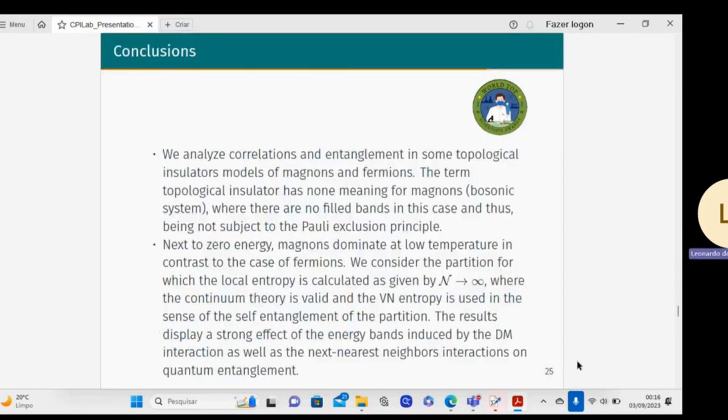As a conclusion, we analyze correlation entanglement in some topological insulator models of magnons and fermions. The term topological insulator has no meaning for magnonic bosonic systems, where there are no filled bands in this case, and thus being not subject to the Pauli exclusion principle. Close to zero energy, magnons dominate at low temperature, in contrast to the case of fermions.